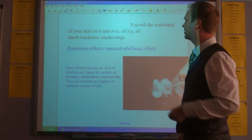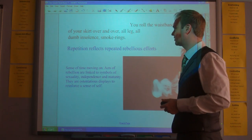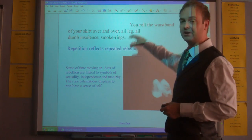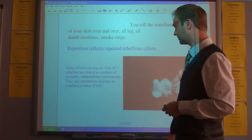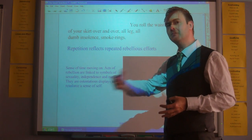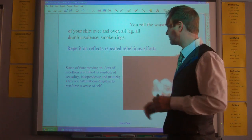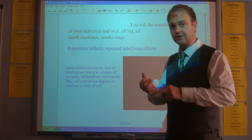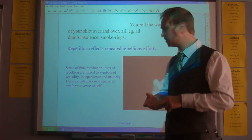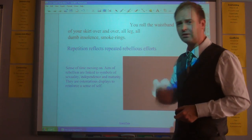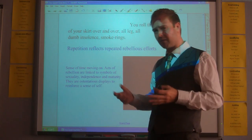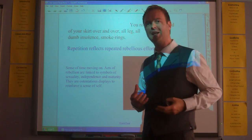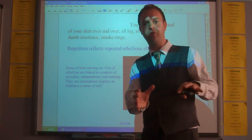'You roll the waistband of your skirt over and over, all leg, all dumb insolence, smoke rings.' That repetition perhaps could reflect the repeated rebellious efforts being made by the poetic voice. Here we've clearly got a sense of time having moved on, despite the fact we're still in the present tense. We've got these acts of rebellion being linked to aspects of sexuality, independence, and maturity. Smoking is often conducted by the young to give a sense of their age — they're ostentatious displays reinforcing a sense of self, a sense of independence, a cutting off from youth, which is going to be significant towards the end of the poem.